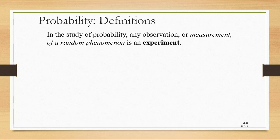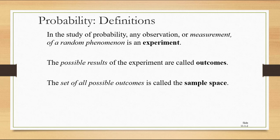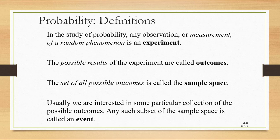In the study of probability, any observation or measurement of a random phenomenon is considered an experiment. This is not necessarily the kind of experiment you do in a laboratory — it could just be you're watching something happen. The possible results of the experiment are called outcomes. The set of all possible outcomes is called the sample space, and usually we're interested in some particular subset of the sample space, a collection of possible outcomes that we refer to as an event.